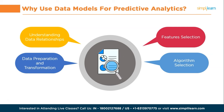Where can we use predictive analytics in real life? Let us now discuss some real-life use cases. First, financial analysis and banking: predictive analytics is used for credit scoring, fraud detection, risk assessment, and investment analysis. It helps financial institutions make data-driven decisions, detect suspicious activities, and identify potential market trends.